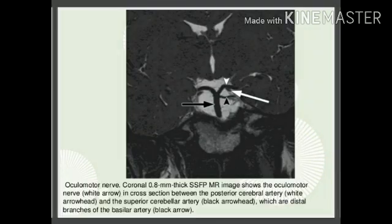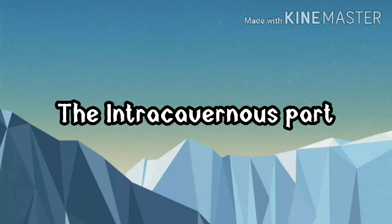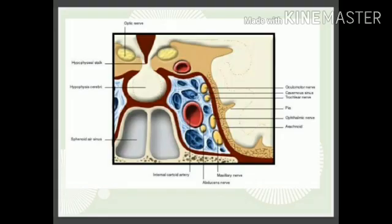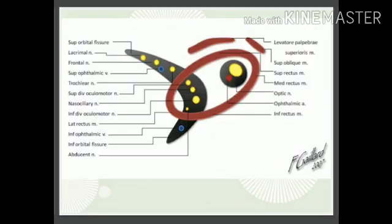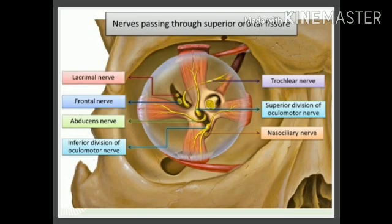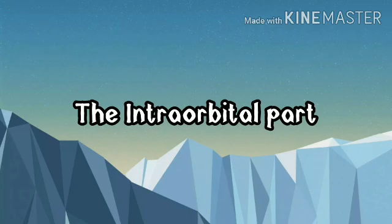The nerve runs forward in the interpeduncular cistern to reach the cavernous sinus. In the intracavernous part, the nerve enters the cavernous sinus by piercing the posterior part of the roof on the lateral side of the posterior clinoid process. It descends to the lateral wall of the sinus, lying above the trochlear nerve. In the anterior part of the cavernous sinus, the nerve divides into superior and inferior divisions, which enter the orbit through the middle part of the superior orbital fissure within the annulus of Zinn. In the fissure, the nasociliary nerve lies between the two divisions, while the abducent nerve lies infralateral to them.